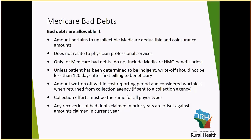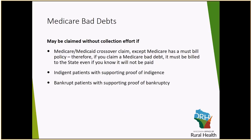Any recoveries of a bad debt claimed in a prior period need to be offset against the claims being submitted for the current year. Bad debts that do not require documented collection efforts occur in three instances. The first is if it is a Medicare-Medicaid crossover claim; what must be documented is that the claim was billed to the state even if you know it will not be paid. The second is if it is an indigent patient, and you must provide support for proof of indigency. Lastly, if you have a bankruptcy patient, you must provide support of the bankruptcy.